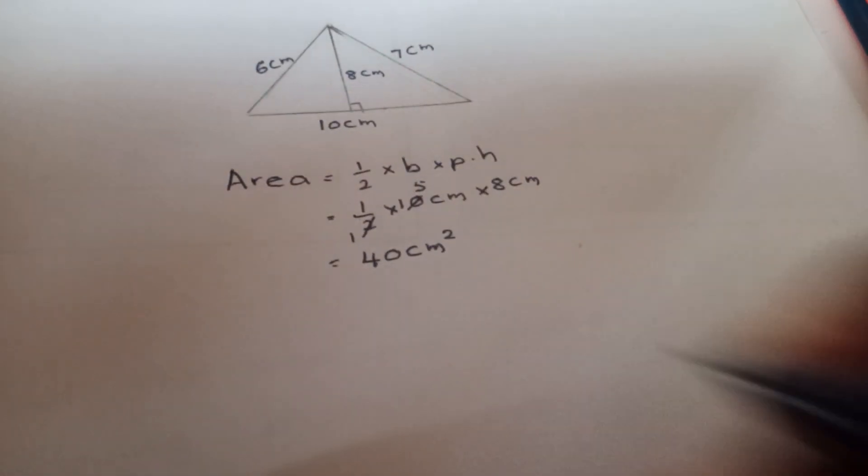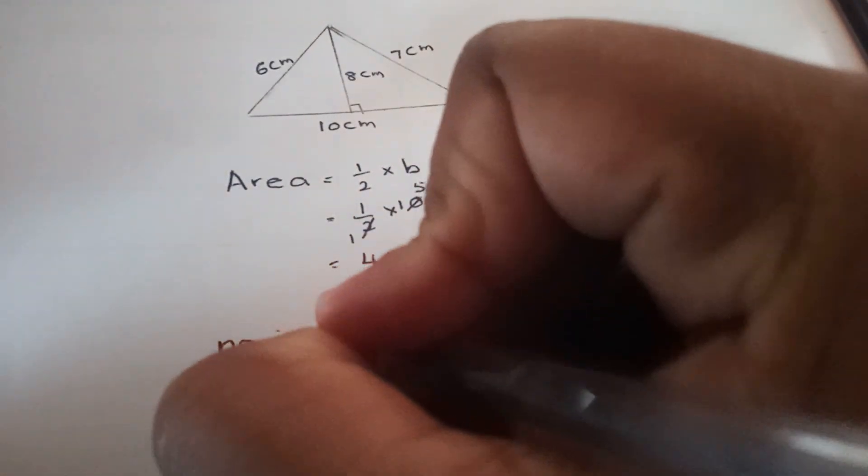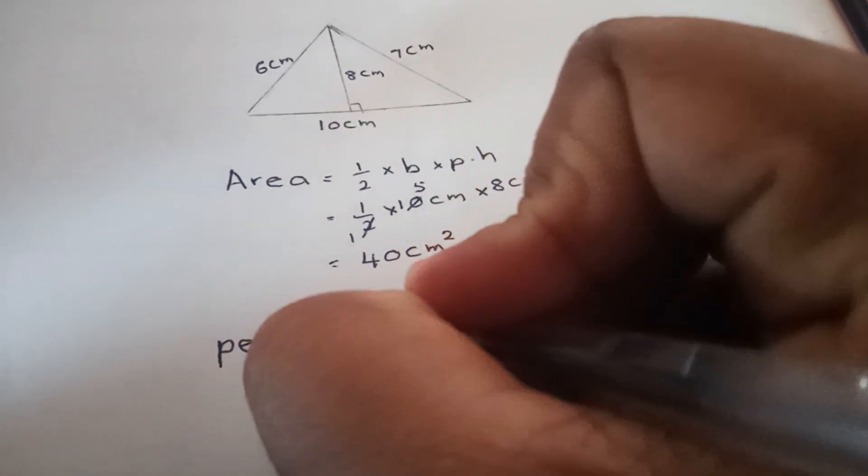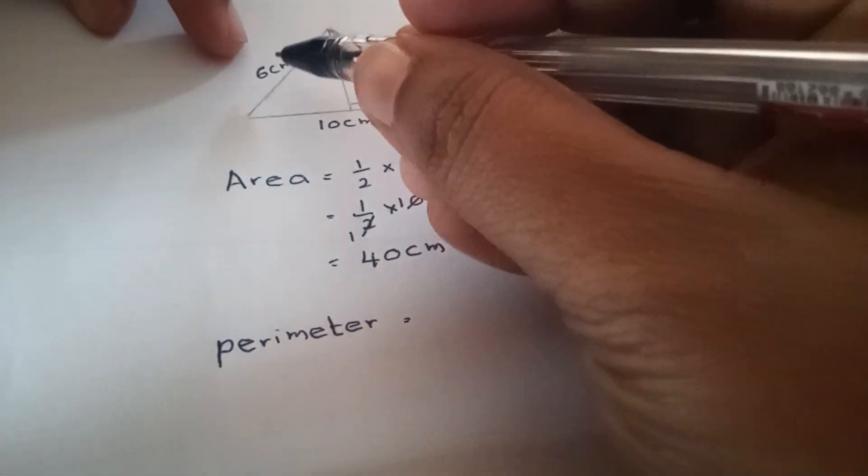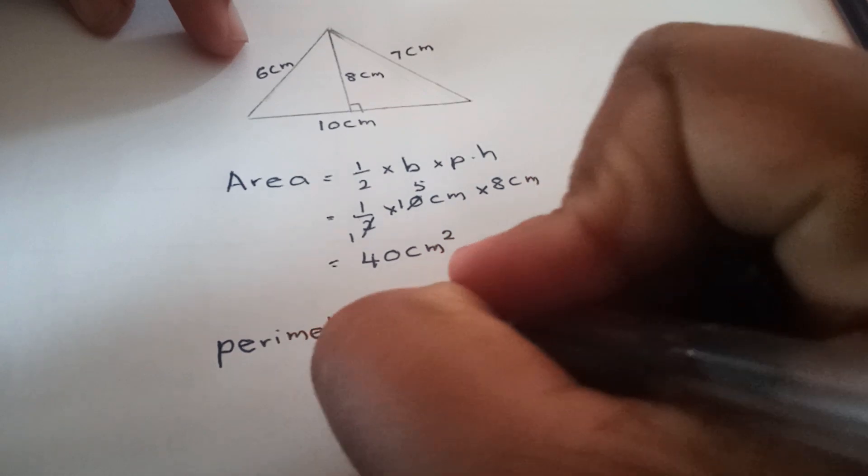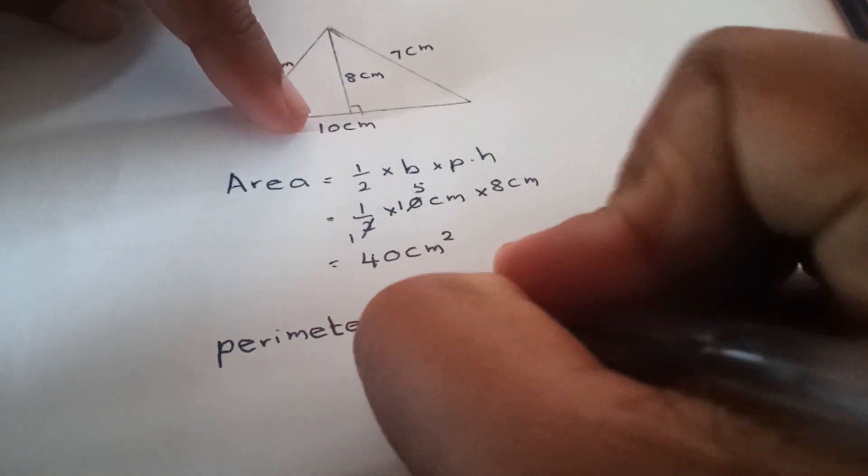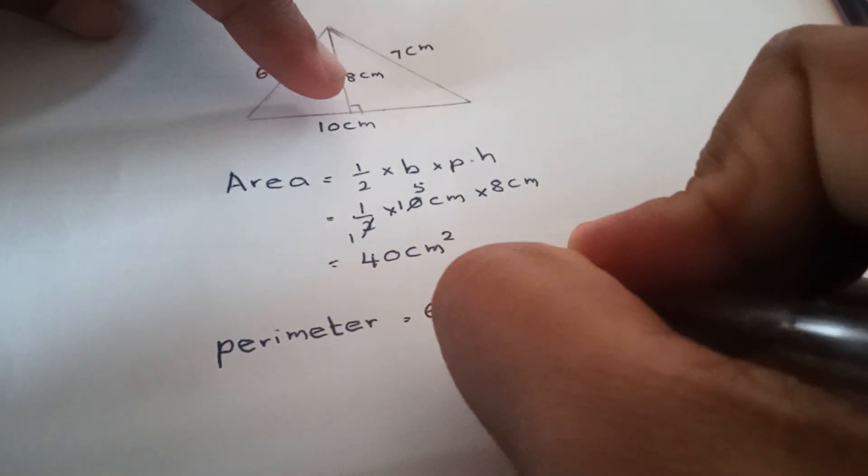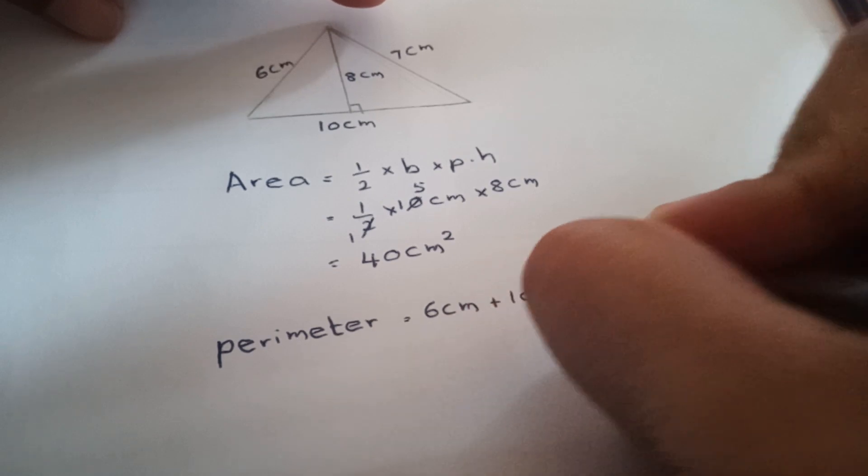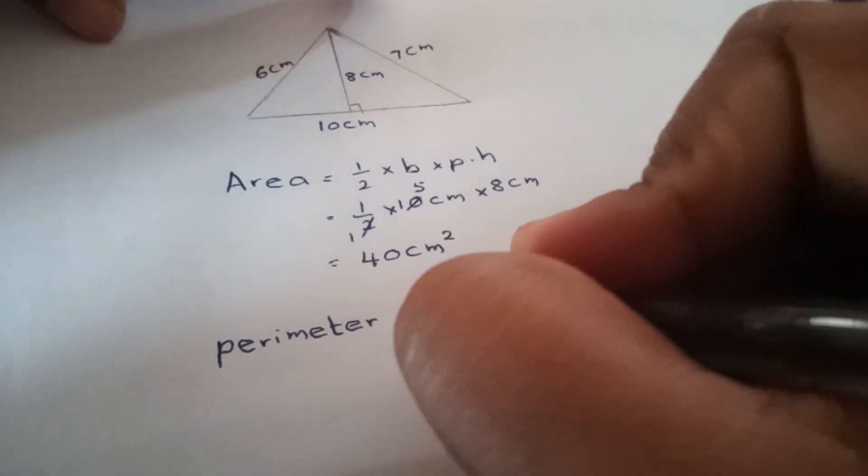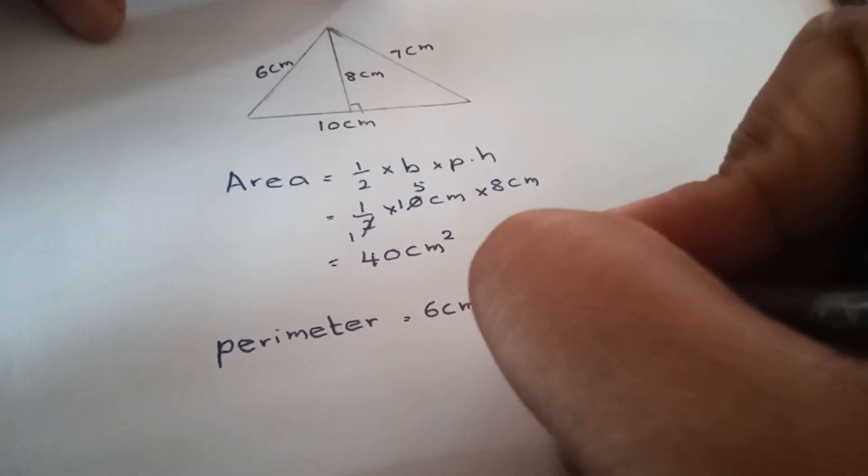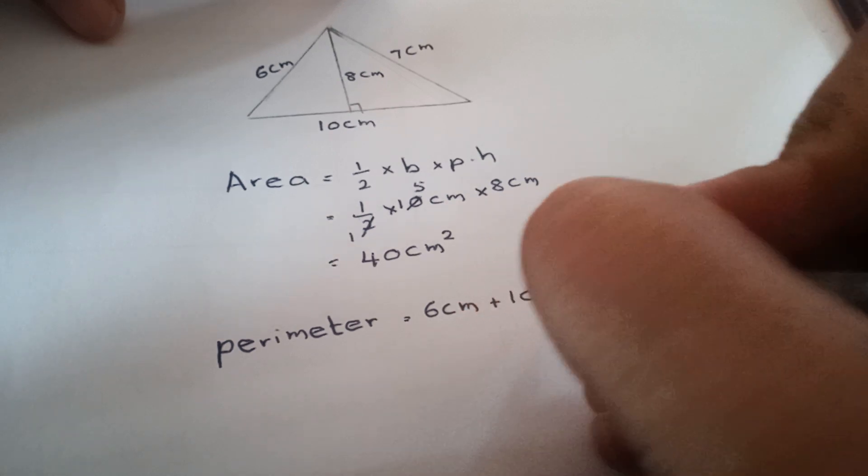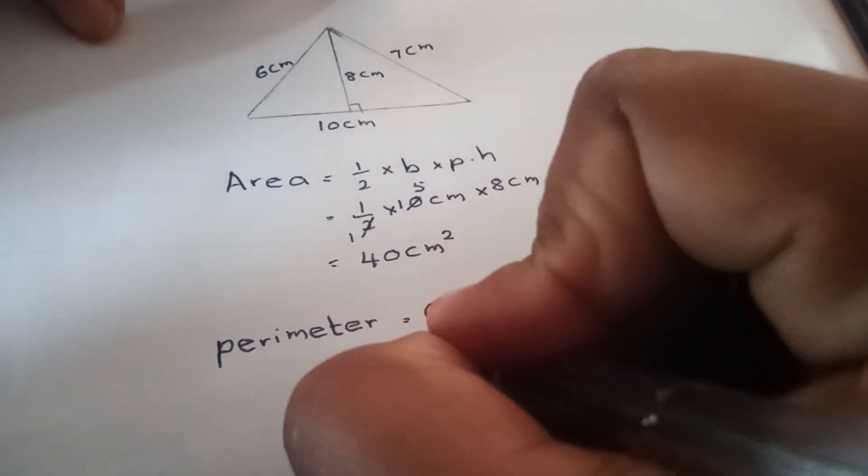the perimeter. How to find the perimeter? By adding all the edges. We'll add all the edges: 6 centimeters, 10 centimeters, 7 centimeters. 6 plus 10 equals 16, 16 plus 7 equals 23 centimeters.